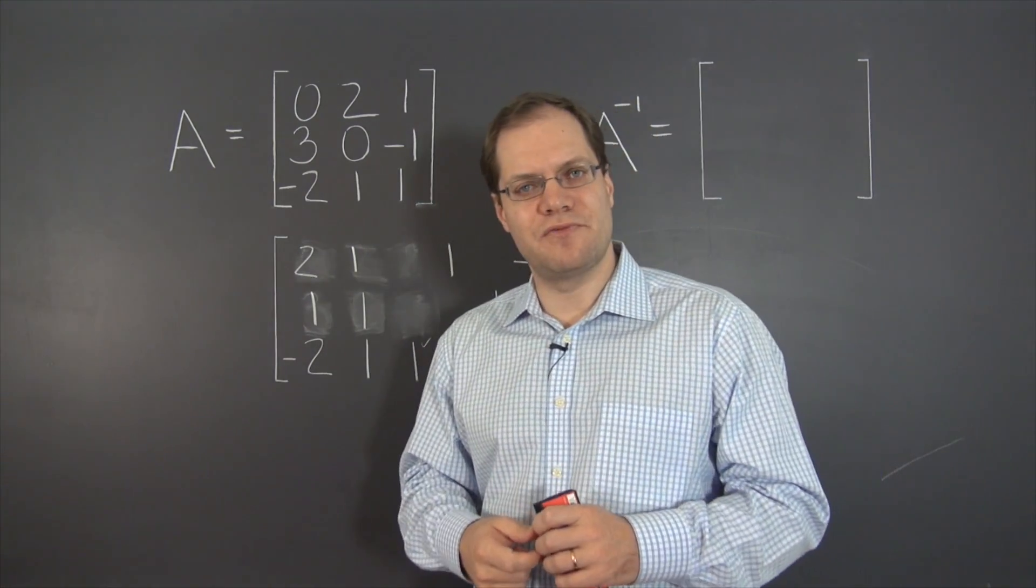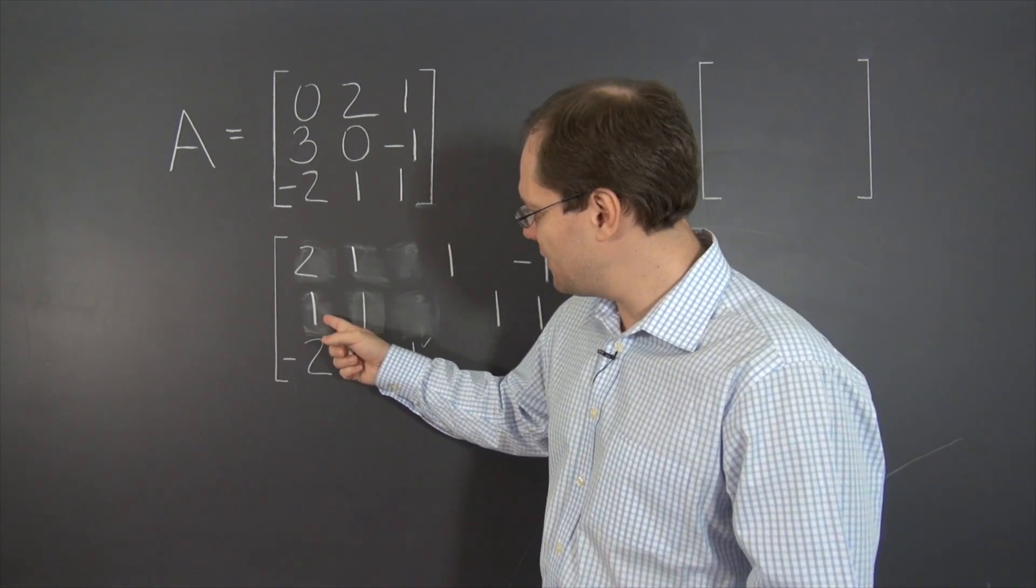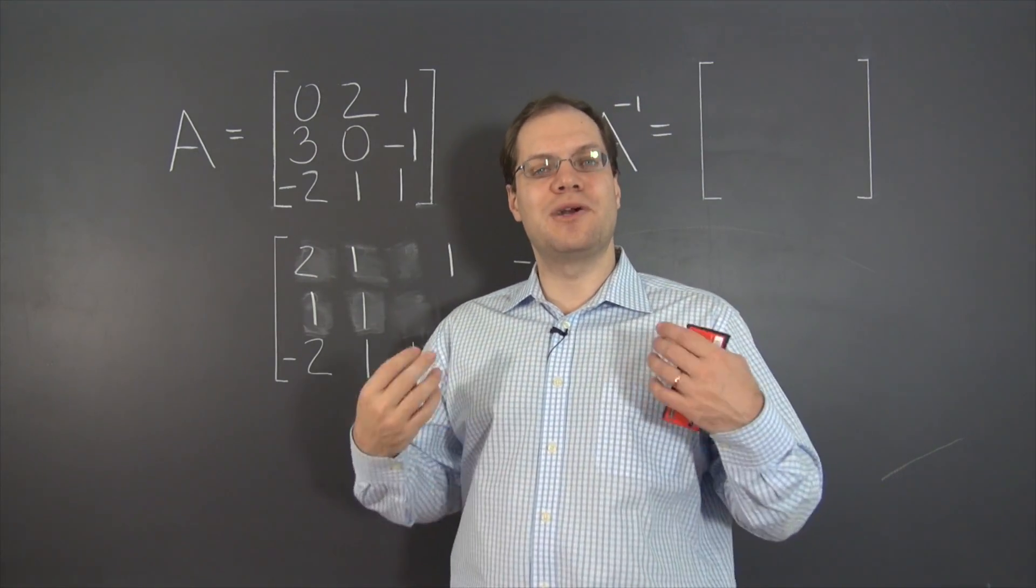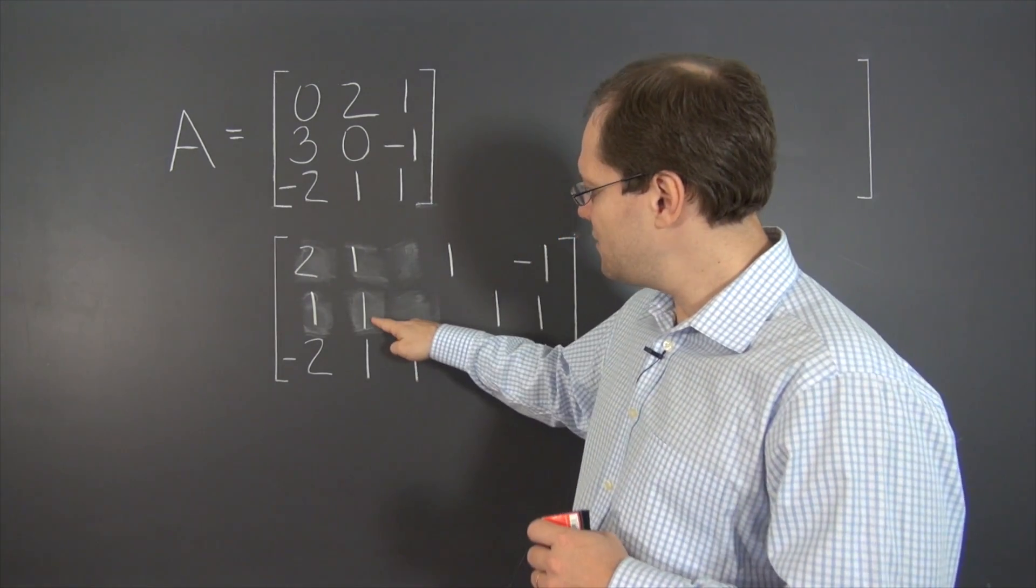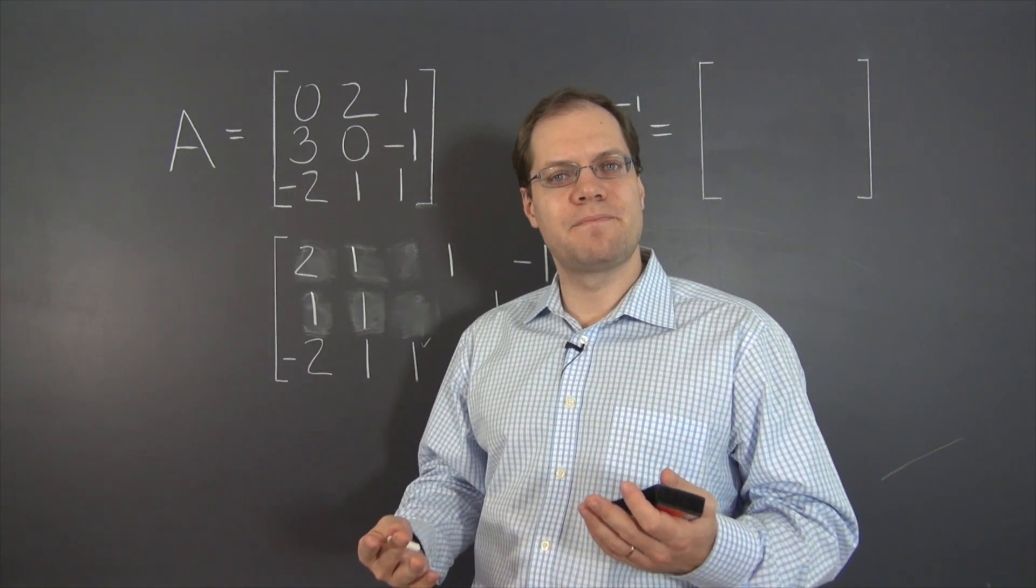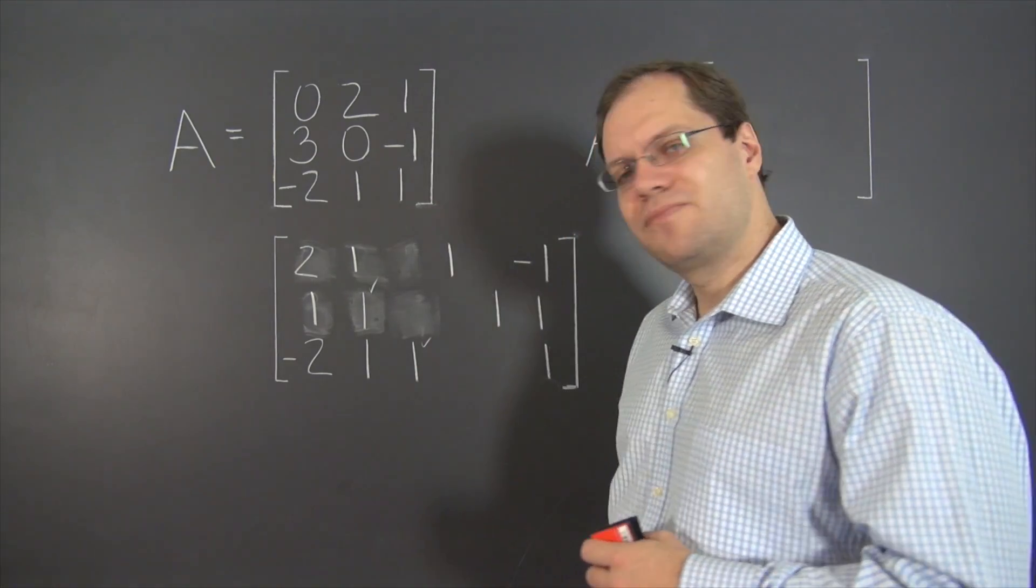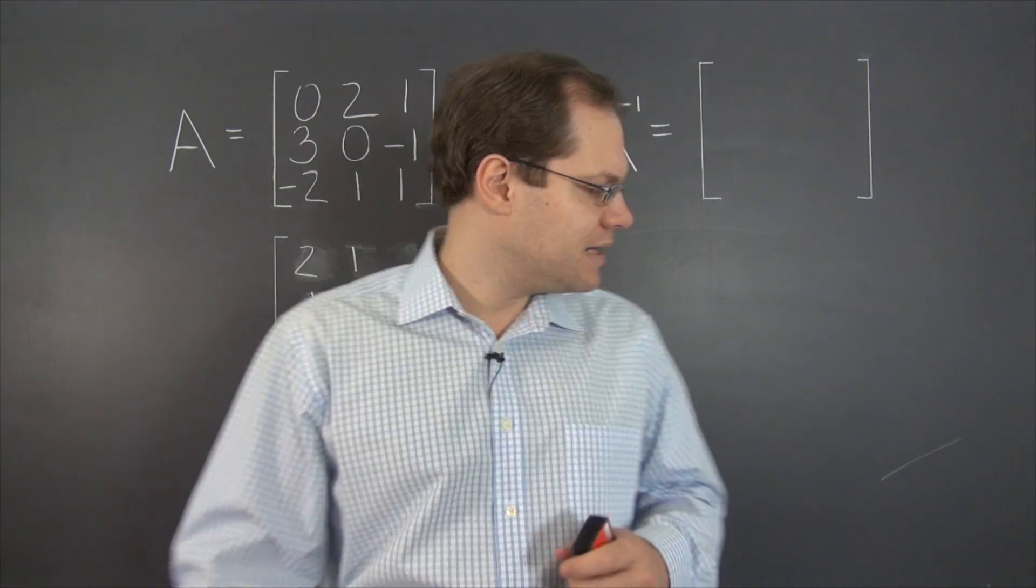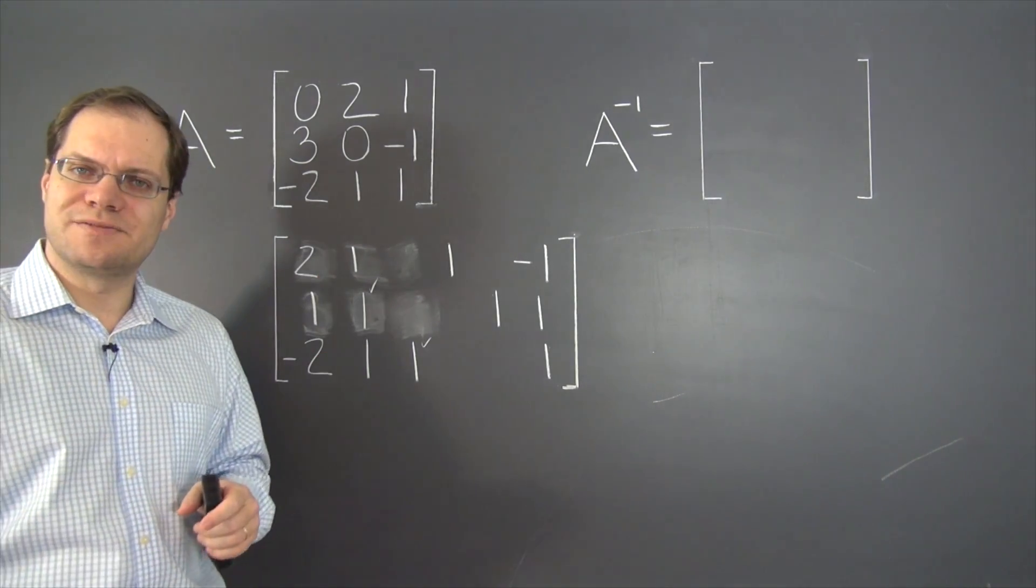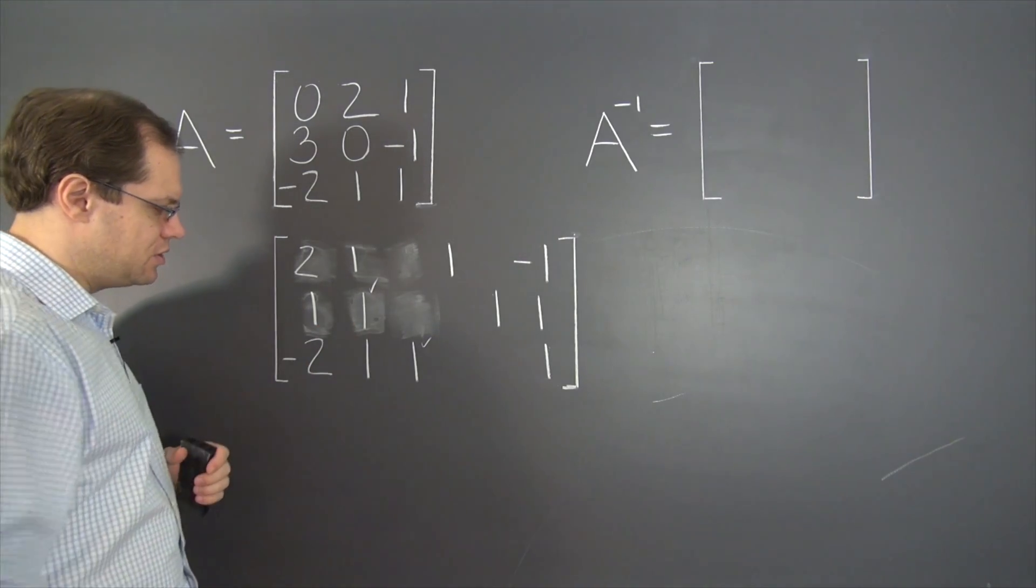Where would the next pivot come from? Well, we could look back to the first column, and now we have a nice one here, so we could switch the first two rows. But if we continue to be creative, why not just use this one as the next pivot? It's already in the right spot and it already equals one, so let's use this as our next pivot. Now, do we want to eliminate stuff above it or below it first? It doesn't really matter, so let's go for this one below it first.